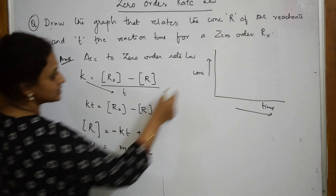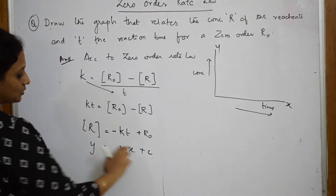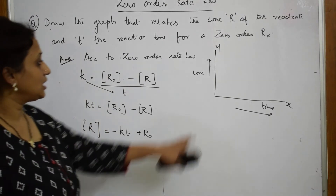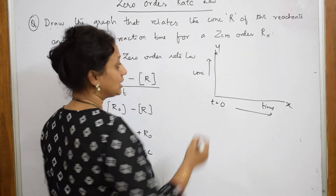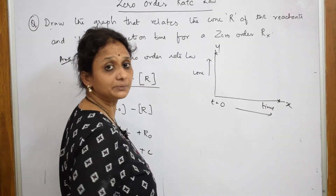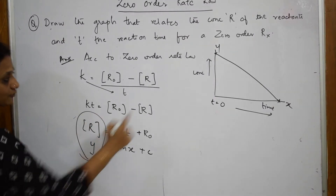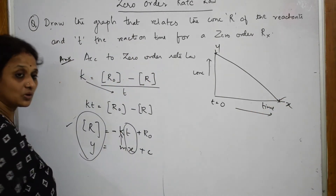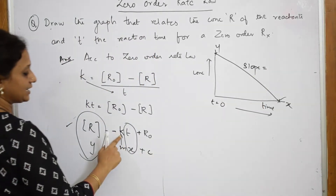Concentration goes on the Y axis and time goes on the X axis. Initially, when time equals zero, the concentration of the reactant is maximum. Gradually as time proceeds, the concentration goes on decreasing. Joining the two intercepts on the graph, you get a straight line. The slope you are getting is a negative slope, so slope equals minus K.